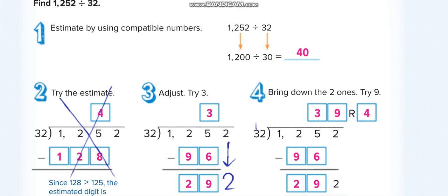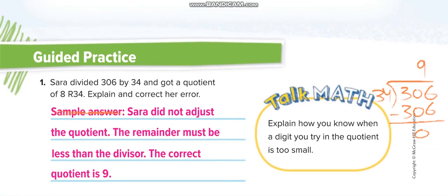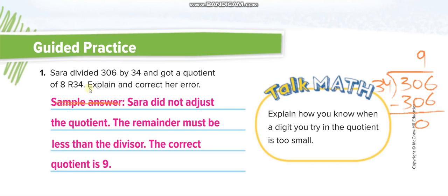Here, Sara divided 306 by 34 and got a quotient of 8 with remainder 34. The divisor is 34 and the remainder is 34. They are equal, which means she solved it wrong. She can multiply by 9 instead.